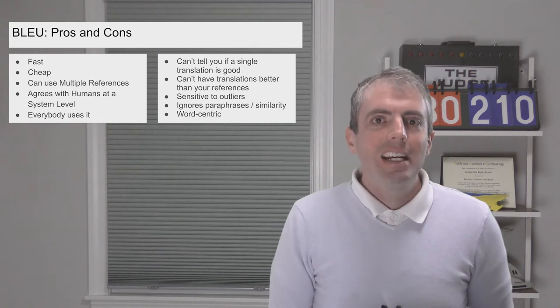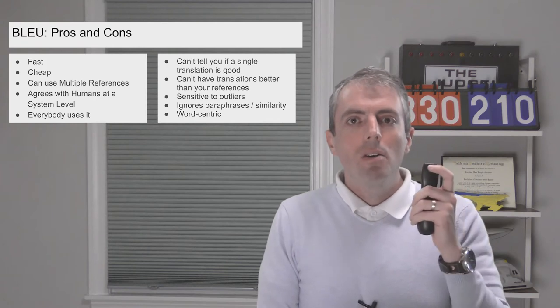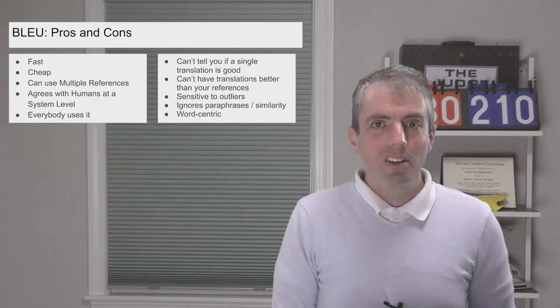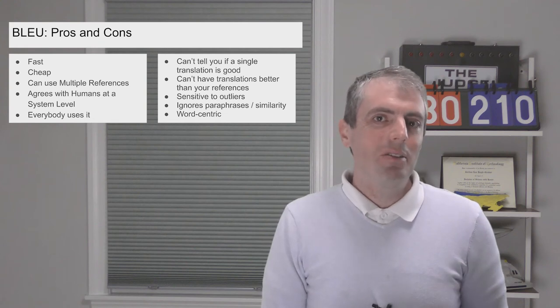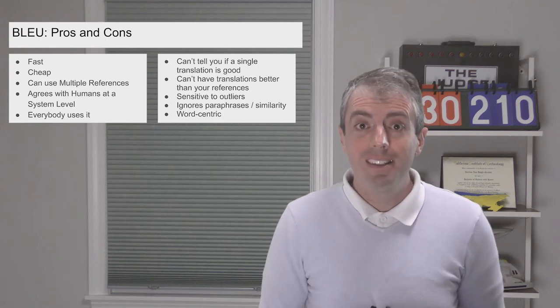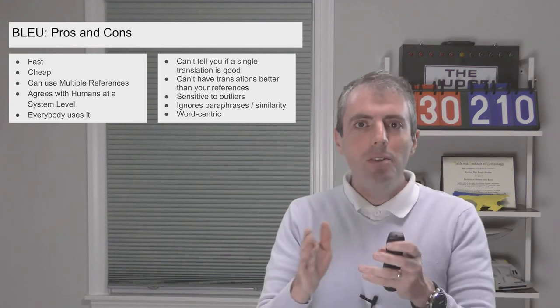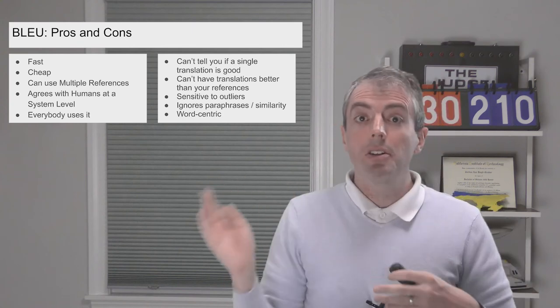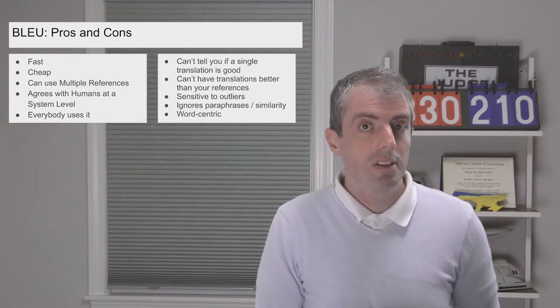But on the other hand, you really can't depend on BLEU to tell you which individual translations are good. It's highly sensitive to outliers, and it doesn't do a good job of allowing for paraphrases or synonyms, which can be a part of a good translation. And it works for some languages better than others. It's highly word-centric, which works well for Western European languages, but less well for highly morphologically rich languages or character-based languages.